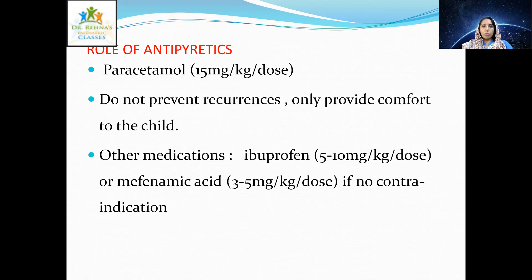Antipyretics do not prevent recurrence but provide comfort to the child. Paracetamol is used at 15 mg/kg/dose. Ibuprofen at 5–10 mg/kg/dose can also be used. Mefenamic acid at 3–5 mg/kg/dose is falling out of favor due to the risk of nephritis. The preferred drugs are paracetamol, and ibuprofen if required.